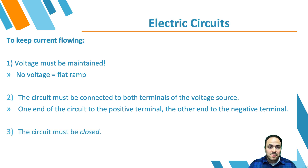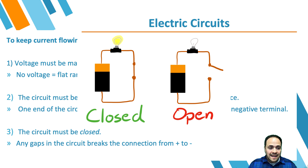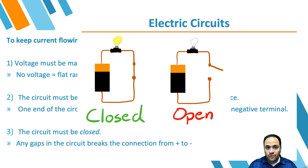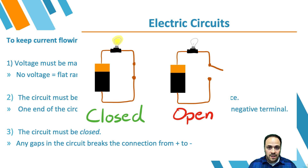The circuit must also be closed — any gap breaks the connection from positive to negative terminal. When you flip off the light switch in your room, you've opened the circuit, which eliminates the potential difference, so electrons stop flowing and your light turns off. That can be handy! But if you want current flowing, the circuit needs to be closed and complete.